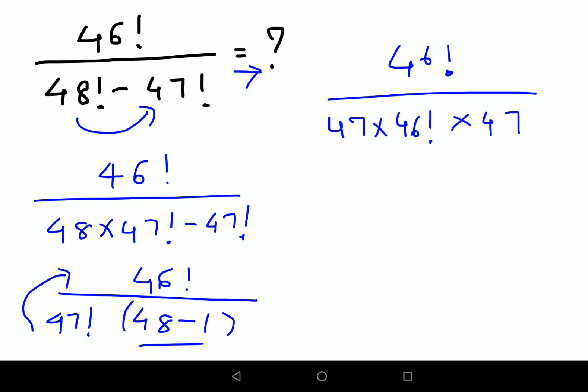So you see 46 factorial and 46 factorial will cancel. So I'm just left with 1 upon 47 square.